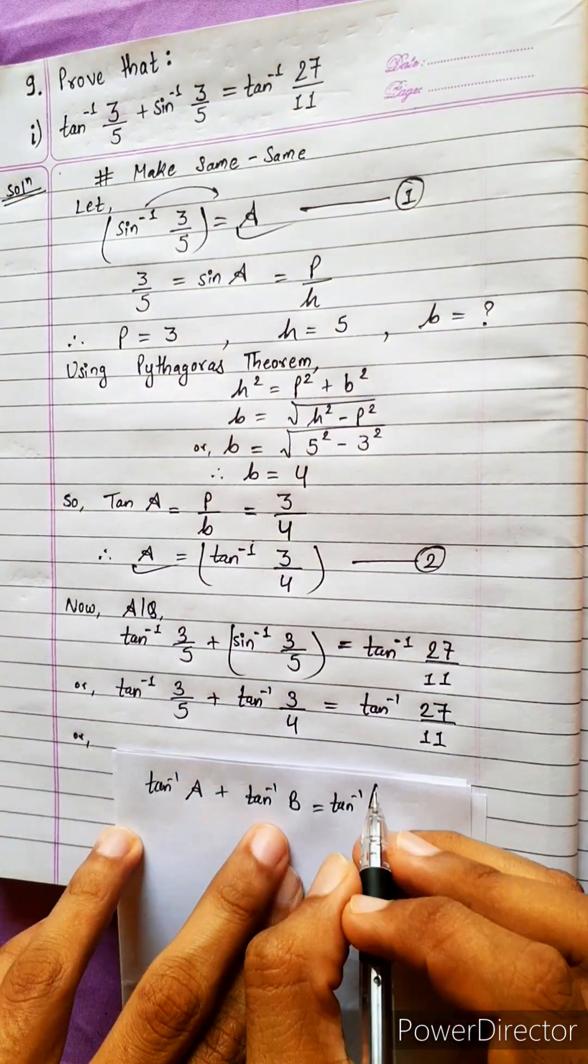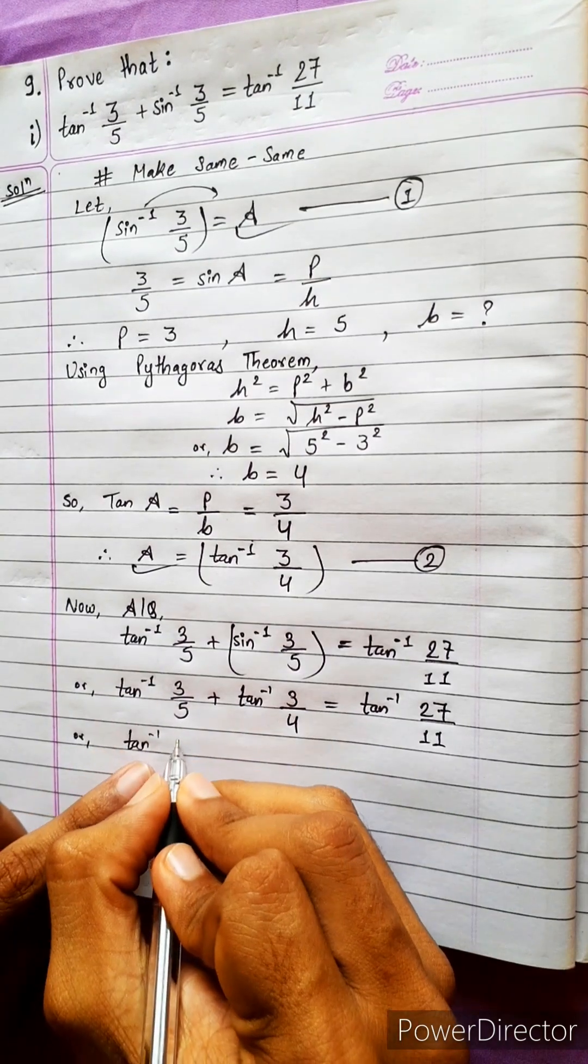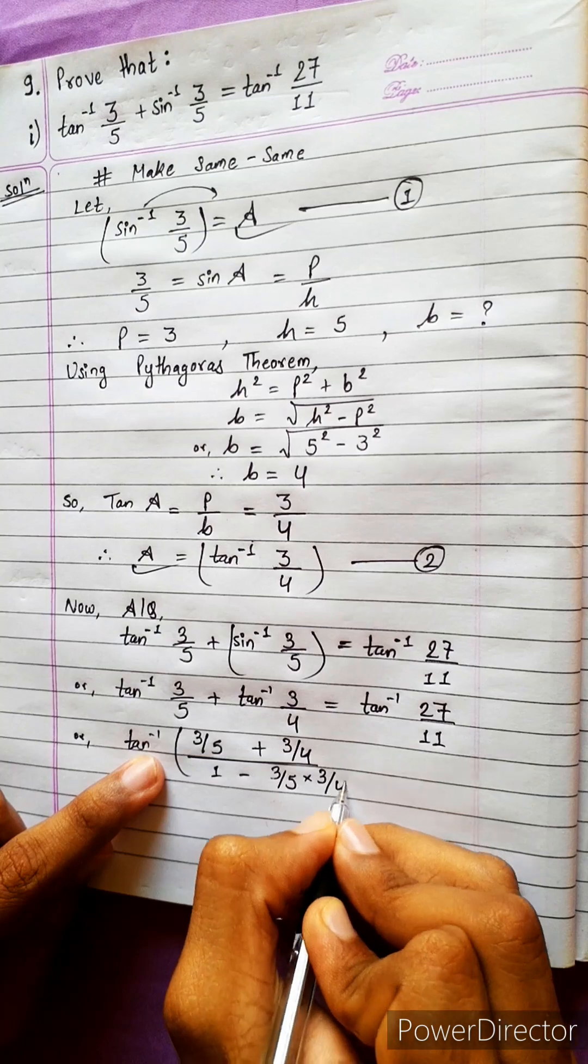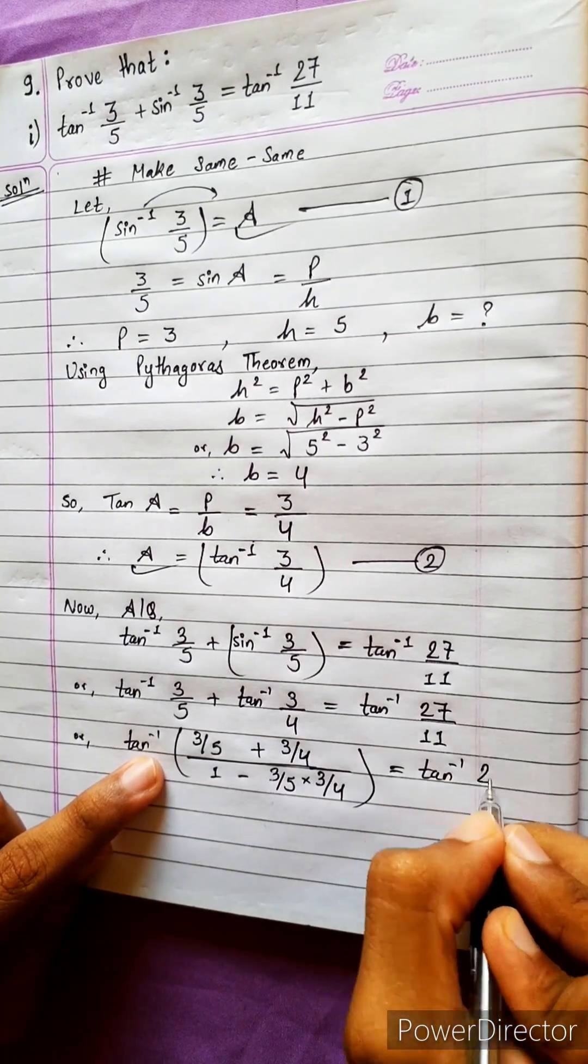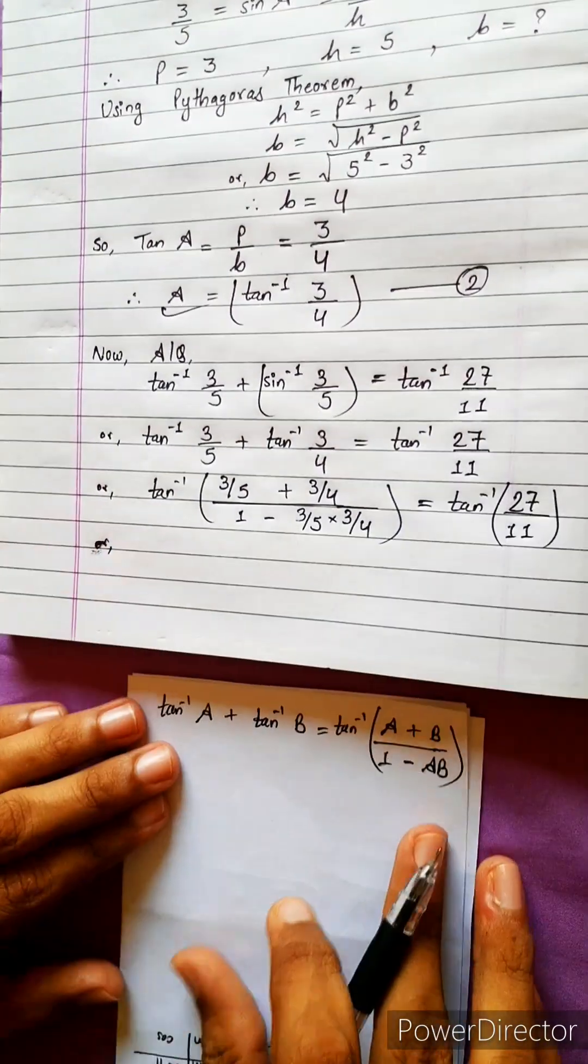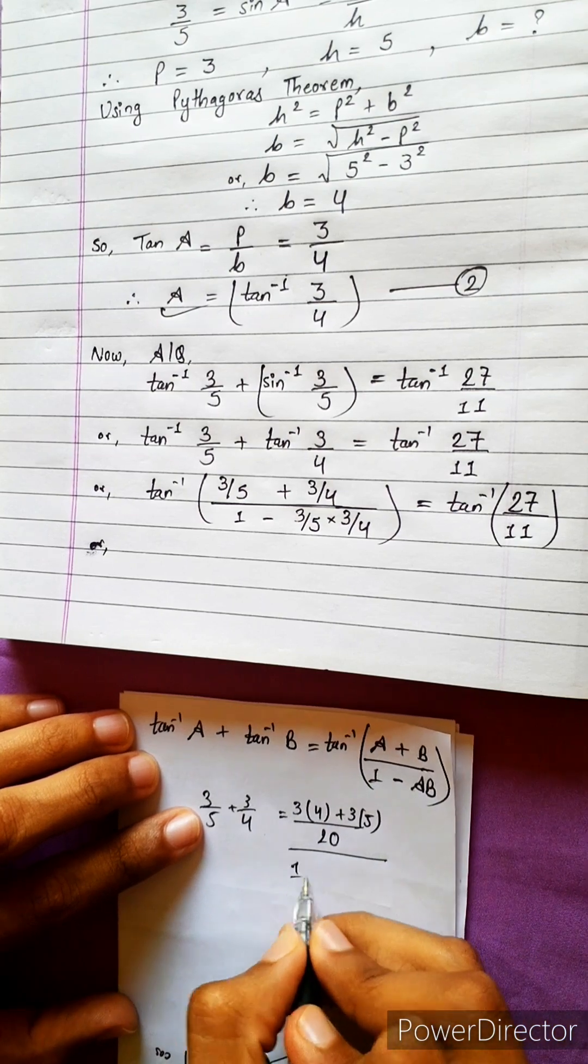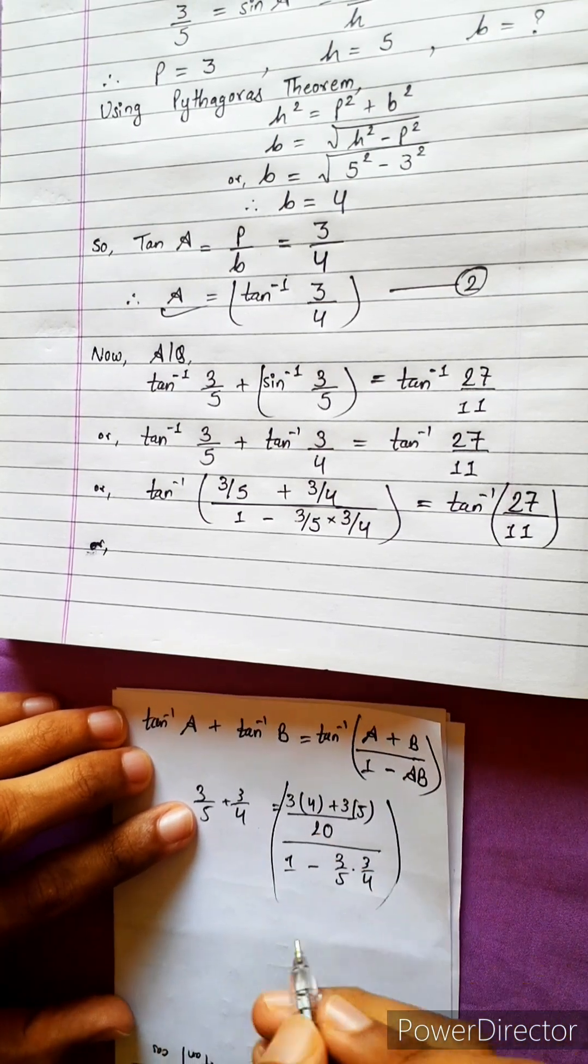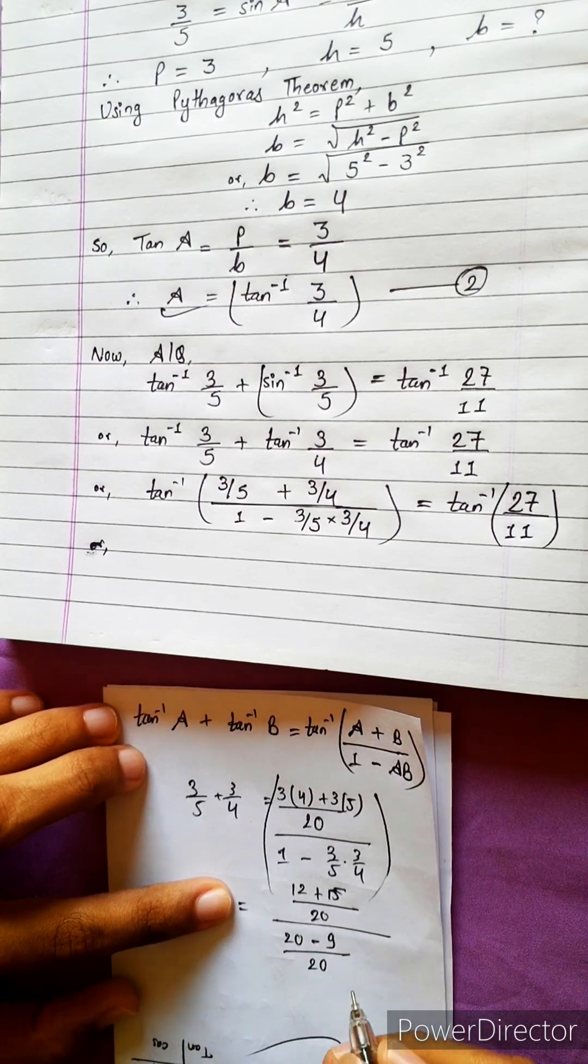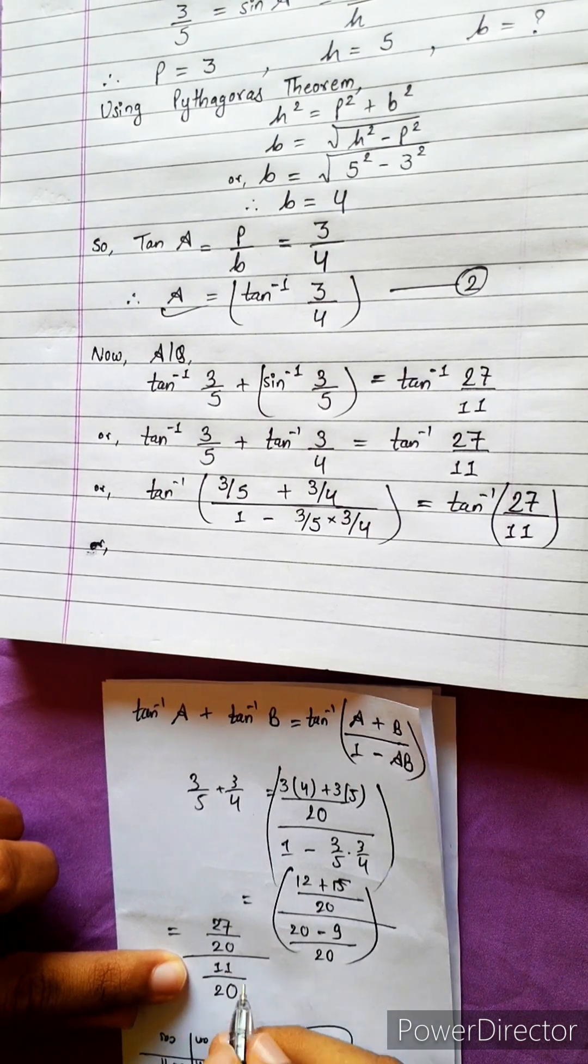Tan inverse a plus tan inverse b equals a plus b by 1 minus ab. So 3 by 5 plus 3 by 4, denominator 1 minus 3 by 5 into 3 by 4. This gives 12 plus 15 upon 20 minus 9, which equals 27 by 11.